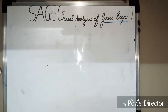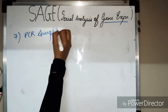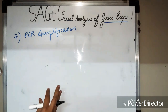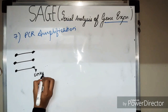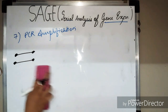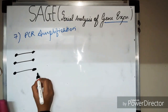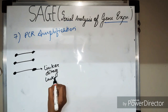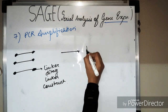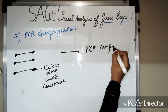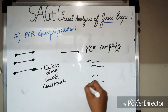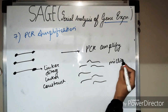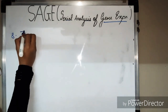In Step 7, the linker–di-tag–linker constructs are amplified using PCR with specific PCR primers. Due to amplification, many copies of the linker–di-tag construct are produced.